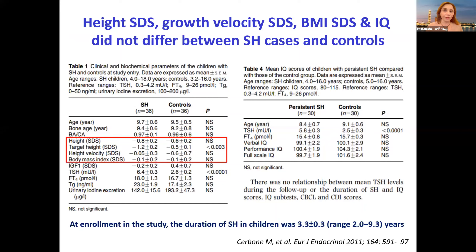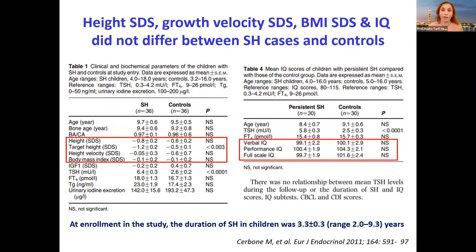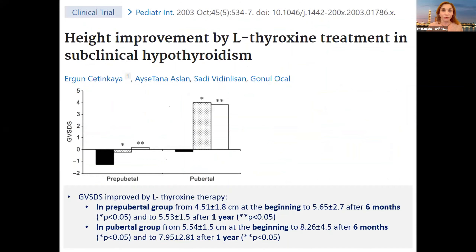Comparing children with subclinical hypothyroidism and controls, there was a non-significant difference in height SDS, height velocity SDS, and body mass index between both groups. There was also a non-significant difference in verbal IQ, performance IQ, and full-scale IQ between children with persistent subclinical hypothyroidism and controls.